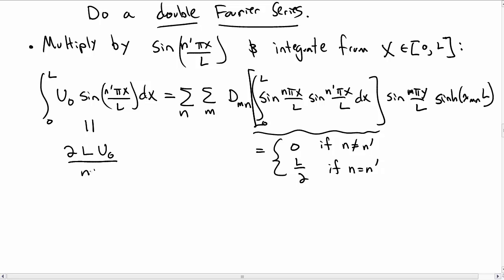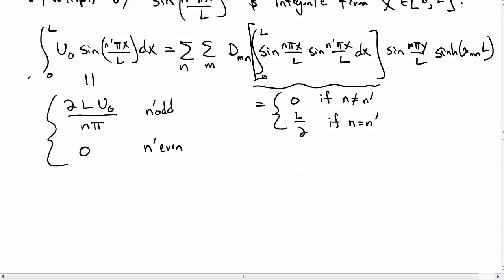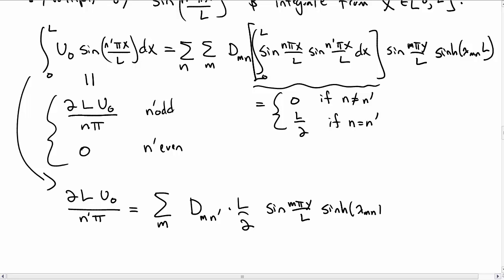The left hand side similarly we can just get 2L/(n'π)·u_0 for n' odd and you get zero if n' is even. So this line we had above simplifies to the left hand side which is some constant, equal to now we only have a sum over m since we collapsed our sum over n: d_mn'·(L/2)·sin(mπy/L) and the sinh(λ_mn·L).